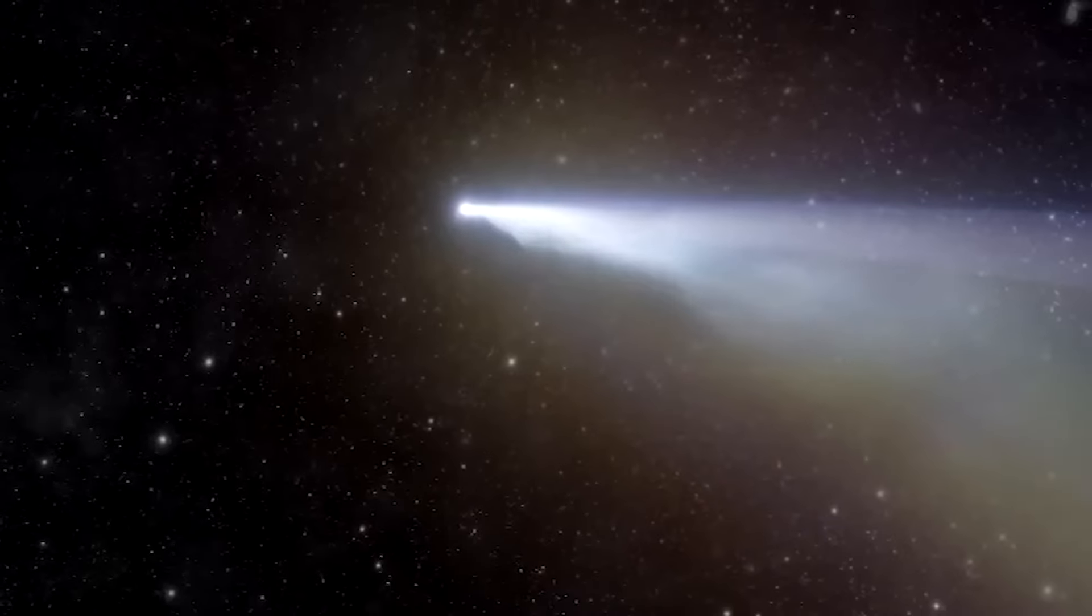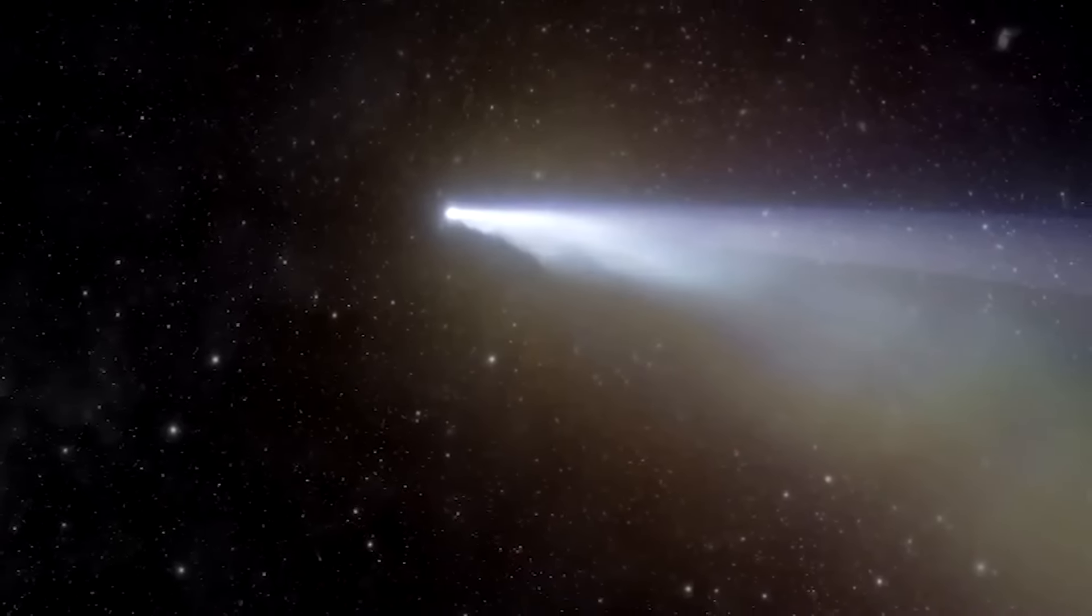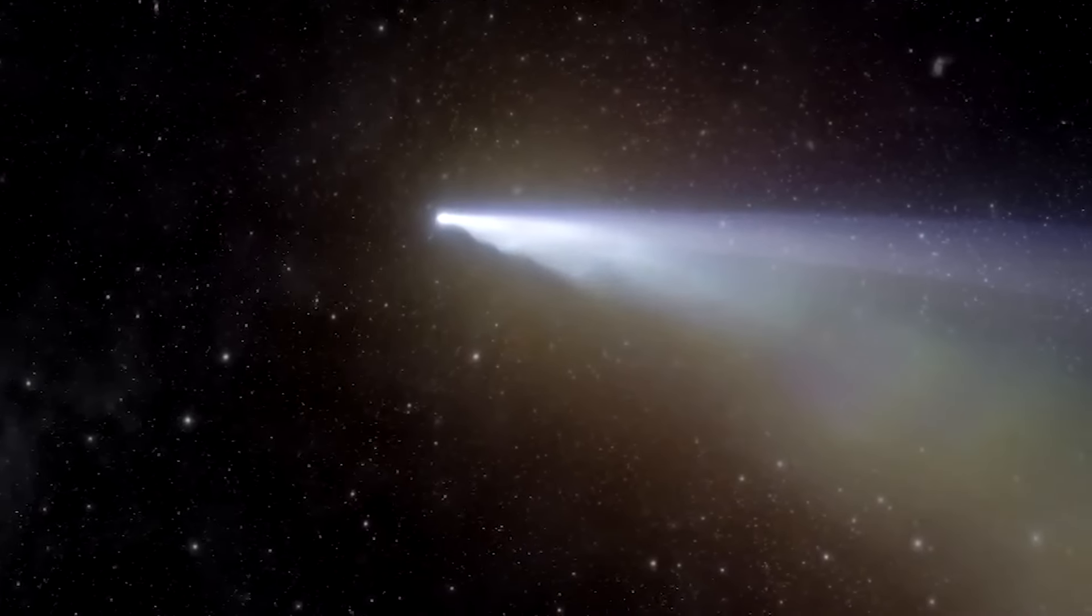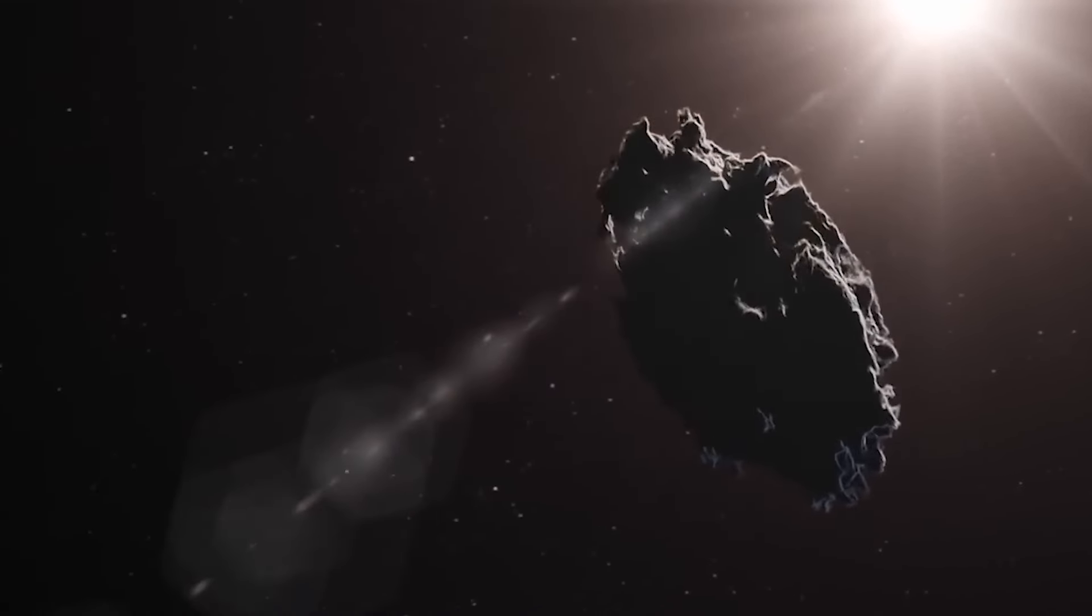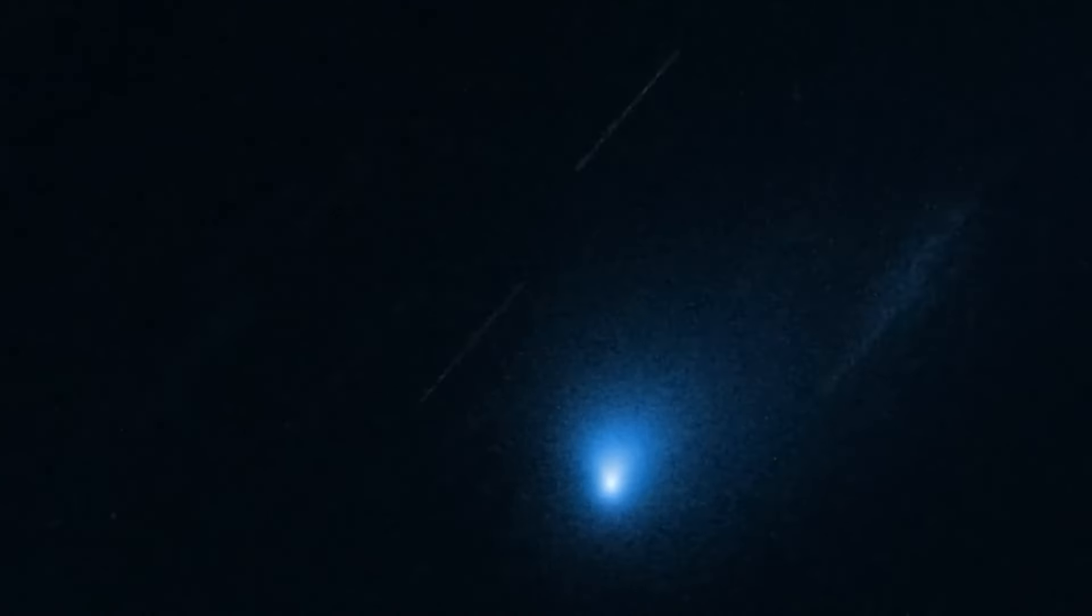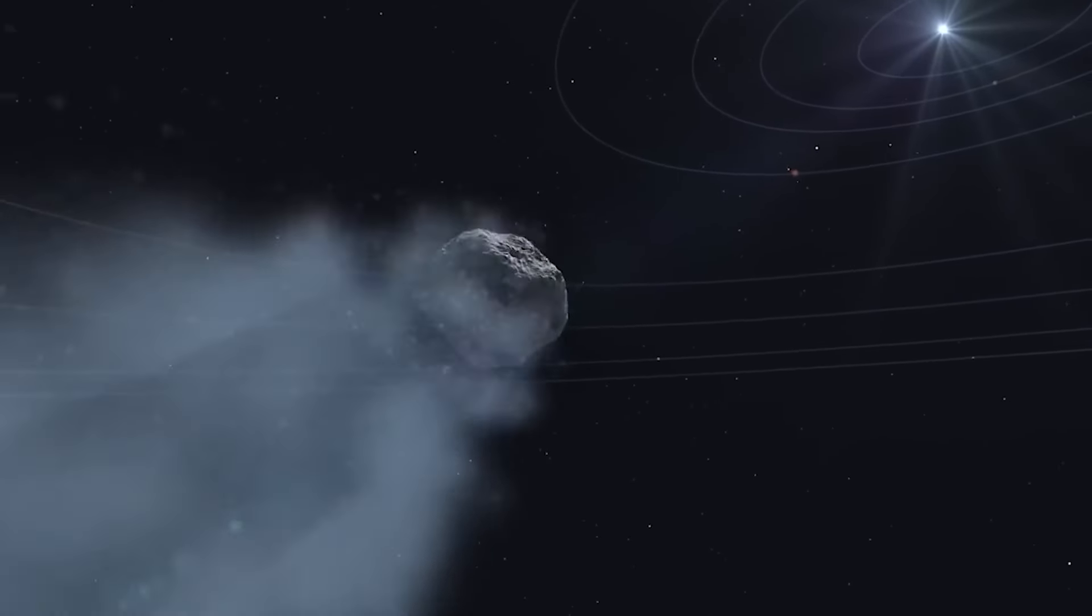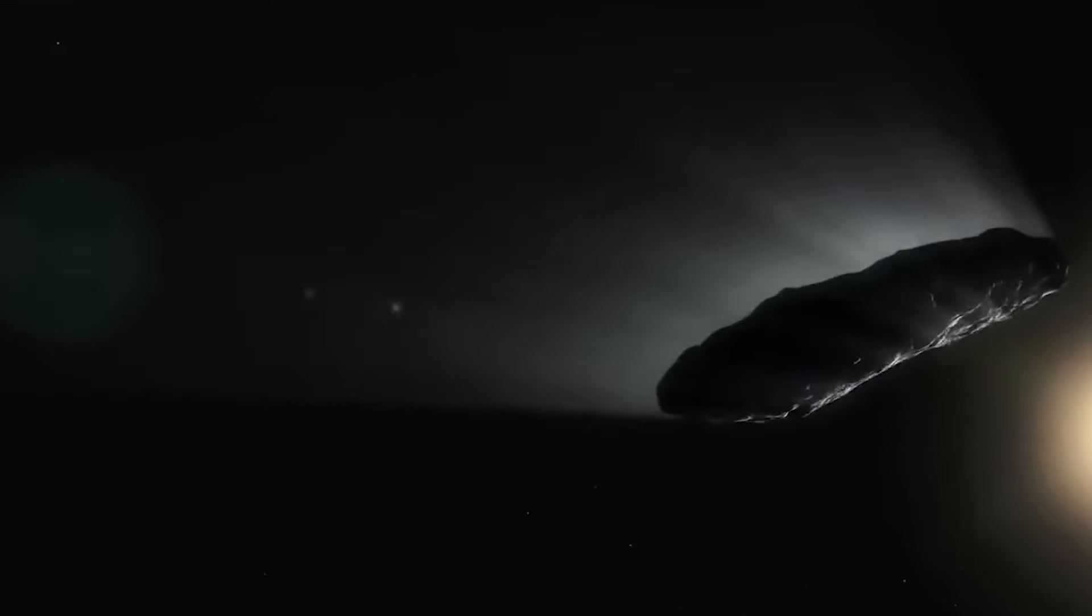Although the hydrogen gas theory has certain limitations, such as the challenge of explaining how the gas could escape from the object's surface without being hindered by gravity, it remains a valuable explanation for understanding the acceleration observed in Oumuamua. Despite its possible inconsistencies, this theory provides significant insight into elucidating the factors that may influence the object's acceleration.